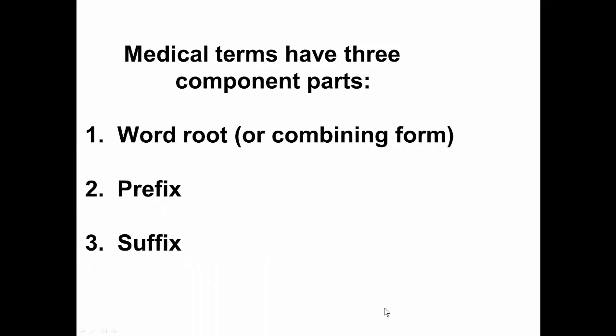Medical and anatomical terms are typically composed of three component parts. First, a word root, which conveys the central meaning of the word. A prefix means to fix before the beginning of a word; it can be a syllable or group of syllables and alters or creates entirely new words. A suffix means to fasten on the end of a word; it too can be a syllable or group of syllables and alters meanings to create entirely new words.